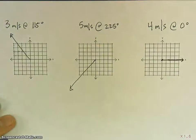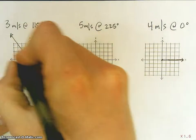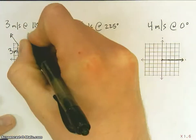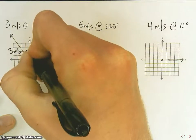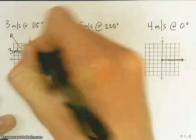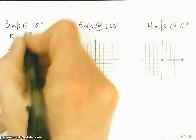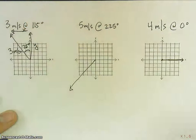I haven't completed that yet because I also need to include my internal angles. So, here I have three meters per second at 115 degrees. If this is 90, that means that from here to 90 is going to be 25 degrees. Here is my y value, there is my x value.